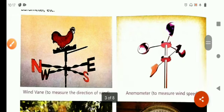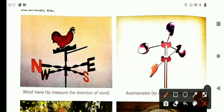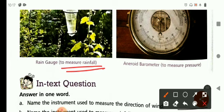Now you can see the picture also of these instruments. This one is wind vane, used to measure the direction of wind. This is anemometer, used to measure the wind speed. This is a rain gauge, used to measure the amount of rainfall. And this is aneroid barometer, used to measure the pressure of wind.